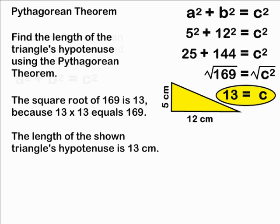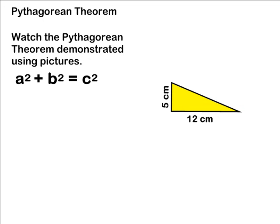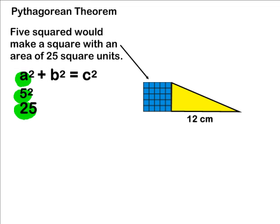To further understand the Pythagorean theorem, let's demonstrate our equation by using pictures. We are going to start with a squared or 5 to the second power. 5 to the second power equals 25. 5 squared would make a square with an area of 25 square units.